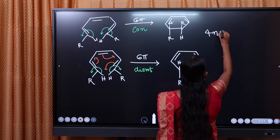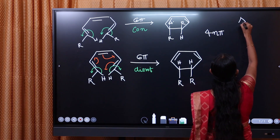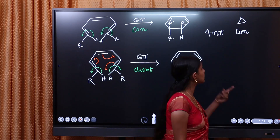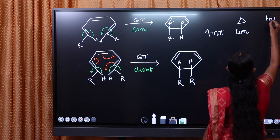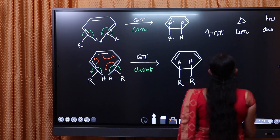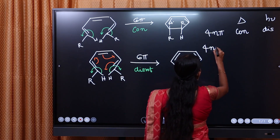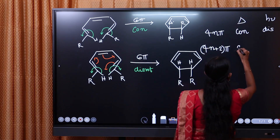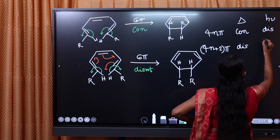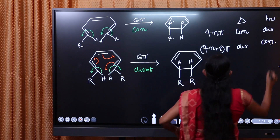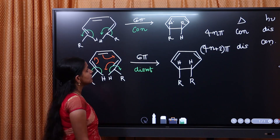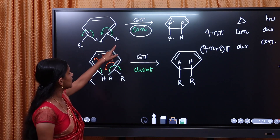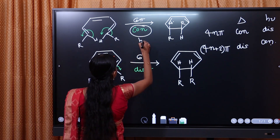4n pi electrons — thermally allowed — that's con-rotation. 4n pi electrons — photochemically allowed — that's also con-rotation. 4n plus 2 pi electrons — thermally allowed — this is opposite: that's dis-rotation. So, 4n plus 2 pi electrons thermally allowed is dis-rotation. 4n pi electrons photochemically allowed is con-rotation. That is photochemically allowed.